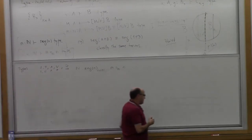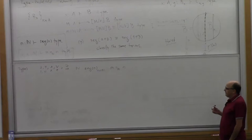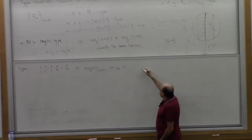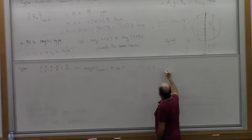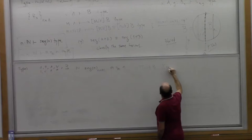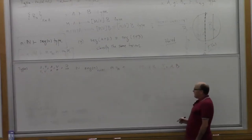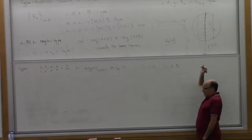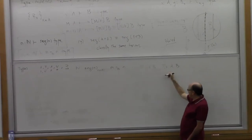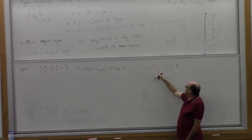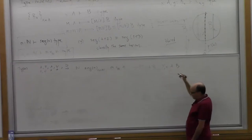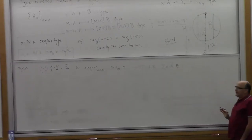Then we want to have some closure conditions — the whole reason for having families is to do something with them. The main things we want to form are what are called the general product and sum: Π(x:A) B and Σ(x:A) B. These are sometimes called pi types and sigma types, product types and sum types. This is sometimes called the dependent function type; this is sometimes called the dependent product type — which is confusing because in certain situations each of them can be called a product.